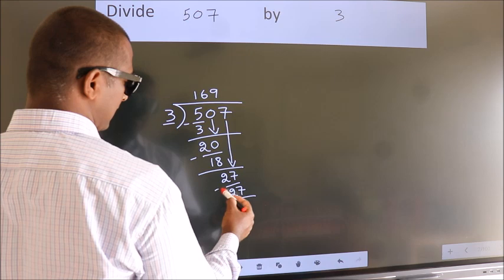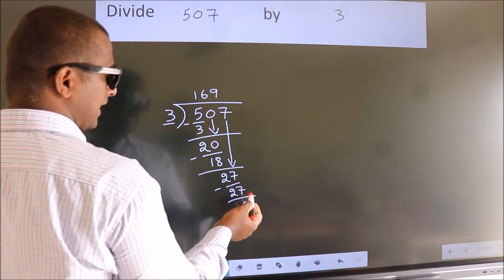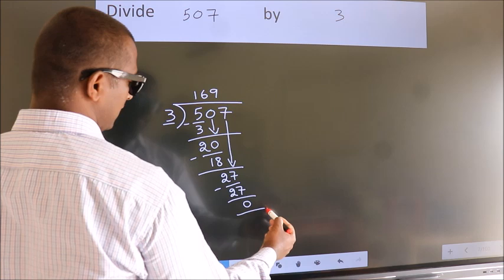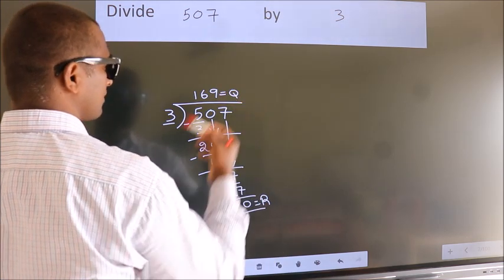Now we subtract and get 0. No more numbers to bring down, so we stop here. This is our remainder. This is our quotient.